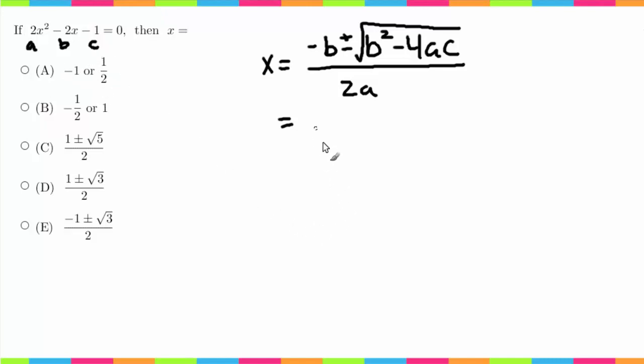Minus b is going to be a positive 2, plus or minus the square root of (-2)² which is 4, minus 4 times 2 times -1, all over 2 times 2.